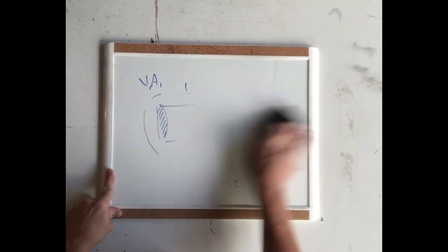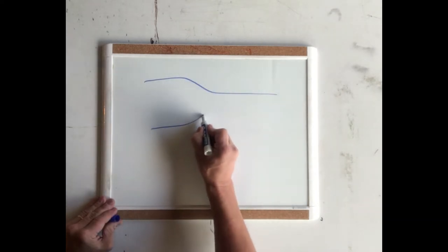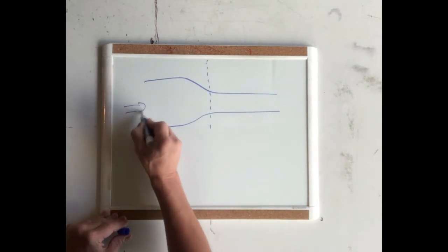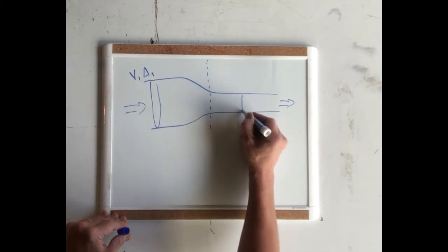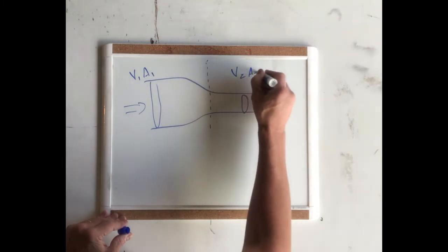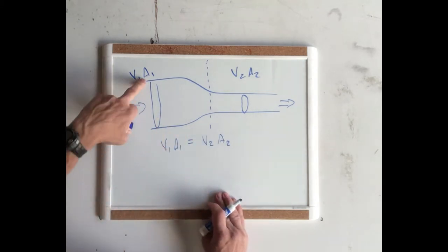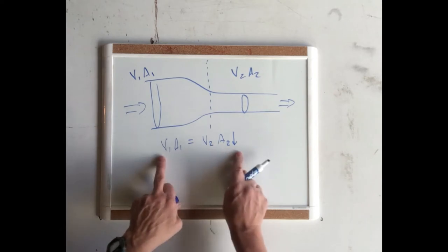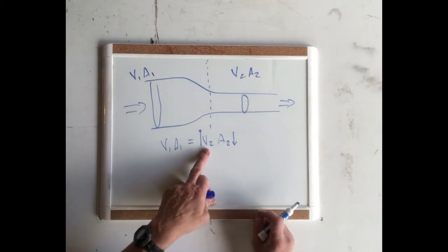Now, what if we redraw this pipe to something that goes from a large area or diameter to a smaller one? We've got our fluid flowing in and coming out the other direction. We still have V1 × A1 on one side, but now we have a smaller cross-sectional area — V2 × A2. For V1 × A1 to equal V2 × A2, if the area on one side has gone down, then the velocity on that side must go up to keep both sides of the equation balanced.